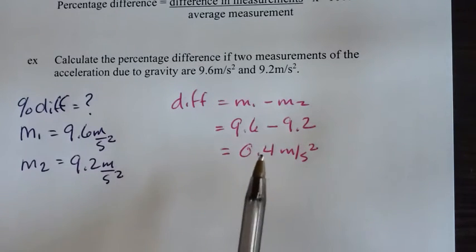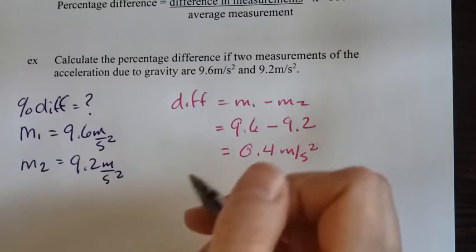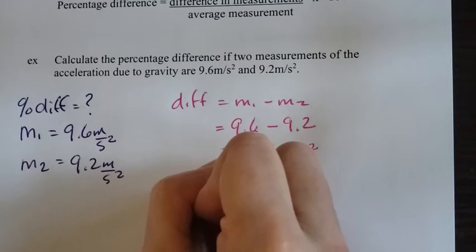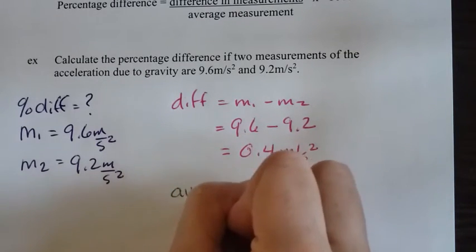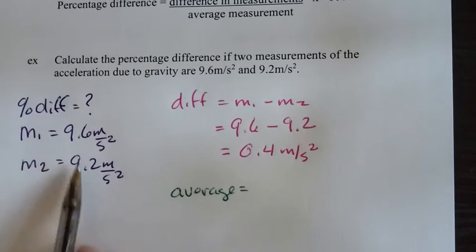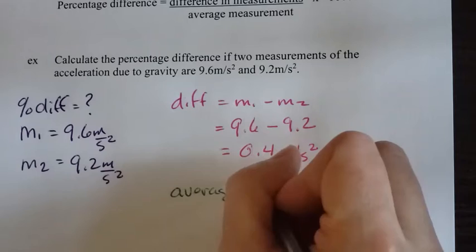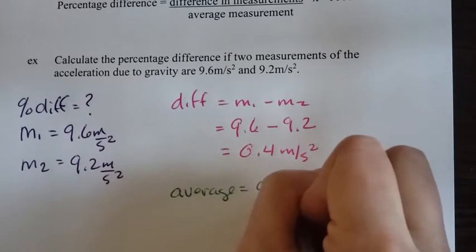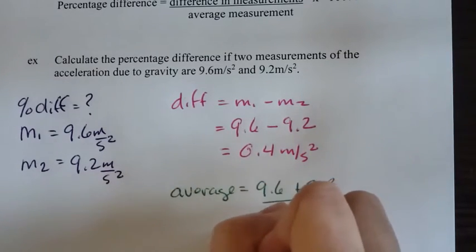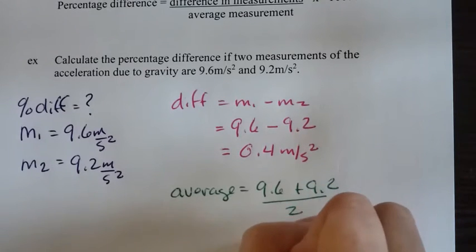That's the first thing I need. The next thing I need is the average. For the average, I take my two numbers, add them together and divide by how many I have. In this case, two. So it's going to be 9.6 plus 9.2 divided by two, and that gives me 9.4 meters per second squared.